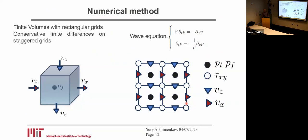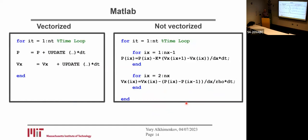Here is the simple one-dimensional representation of such a code. If it is not vectorized, we have a time loop to integrate in time, and also a for loop to update pressure and velocities at all spatial positions.